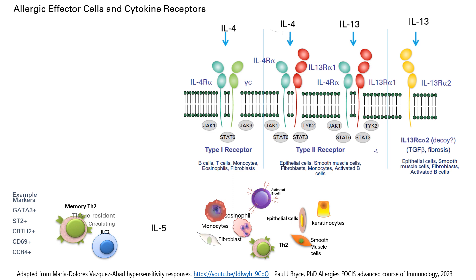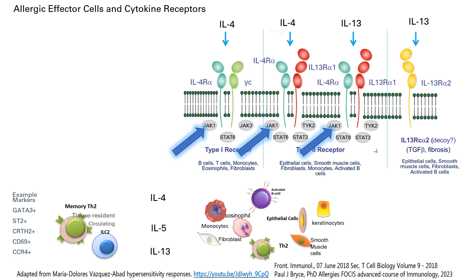Interleukin-13 can also bind an interleukin-13 receptor alpha 2, which has no Janus kinases associated intracellularly. For a long time this was perceived as a decoy system — something that could dampen a response and no longer activate cells. However, recent publications have found that this receptor type eventually produces transforming growth factor beta and may be associated with fibrosis. The common feature across the two cytokines and the activating receptor types is the presence of JAK1, which is absent in the IL-13 receptor alpha 2 system.